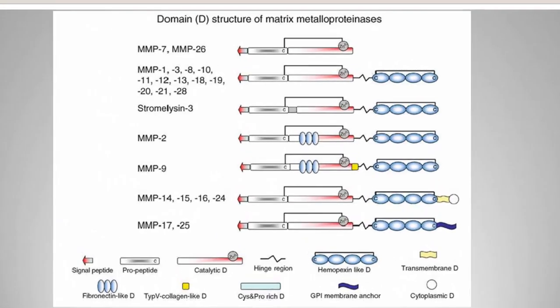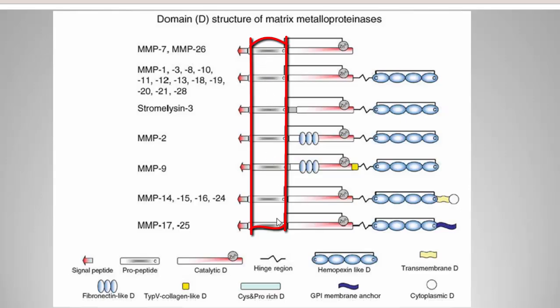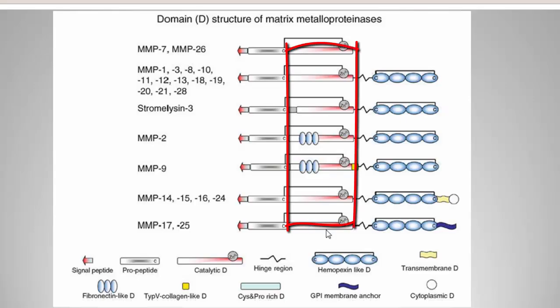The general domain structure of matrix metalloproteinases varies across types like MMP7, MMP26, MMP2, and MMP9, based on activity such as collagenases or gelatinases. Generally, there is a pro-peptide sequence everywhere, which is inactive and must be removed to become active. There is a signal peptide and a catalytic domain containing a zinc ion everywhere, because zinc is essential for MMP activity — without zinc, it does not work.